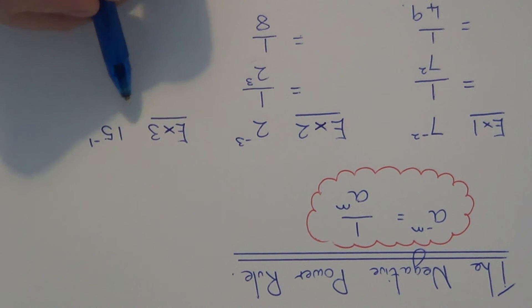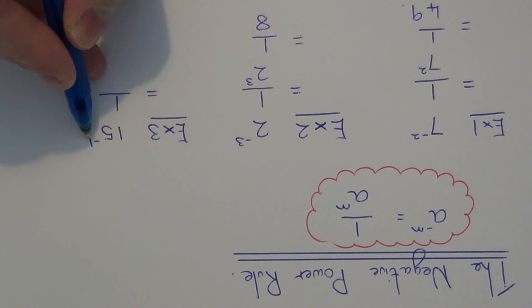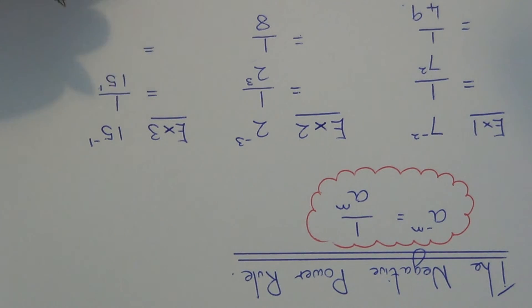So moving on to example 3. This time we've got 15 to the power of minus 1. So again just put 1 on the numerator and write 15 to the power of 1 on the denominator. Now 15 to the power of 1 is just the same as 15. So our final answer is 1 15th.